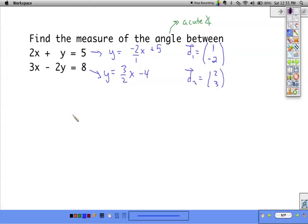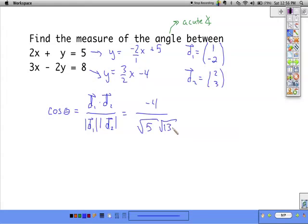So, to find the angle between them, we're going to take d1 dot d2 over the magnitude of d1 times the magnitude of d2. The dot product is negative 4. So, the two magnitudes are square root of 5 and square root of 13.